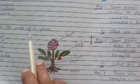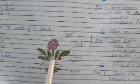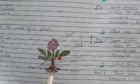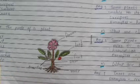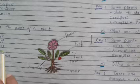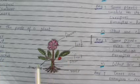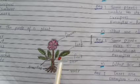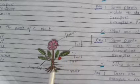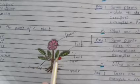Name the parts of a plant. Draw a plant picture and write the parts of the plant. The parts are: flower, fruit, leaves, stem, branches, and roots.